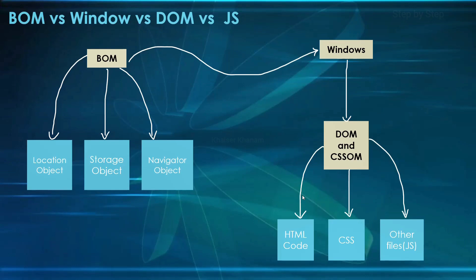I have made this image for you. In our previous session we have seen BOM stands for Browser Object Model. Whenever we are writing any code, BOM will be giving us access to many objects — like we have location object, storage object, navigator object. These are provided by BOM, but these can be accessed only by using Windows.